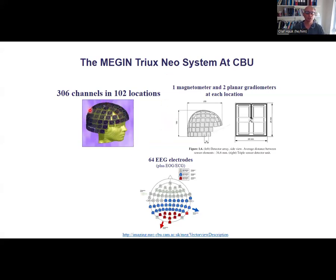So that is the arrangement that we have in our triax system here at the CBU. So they have these 102 locations, 102 microchips that have or chips that have three types of sensors, one magnetometer and two gradiometers here. Planar gradiometers in one location, you can optionally choose to record from EEG as well. So this is actually quite a clever arrangement to get maximum information here from the sensor array.